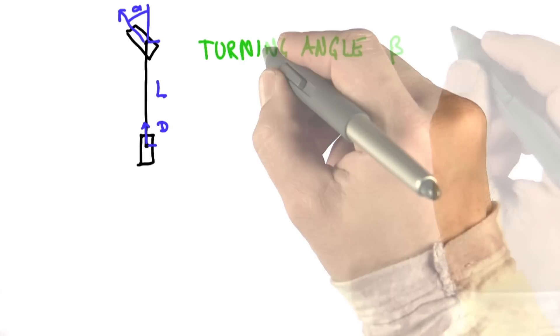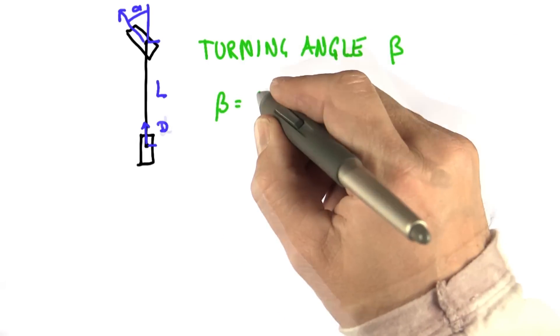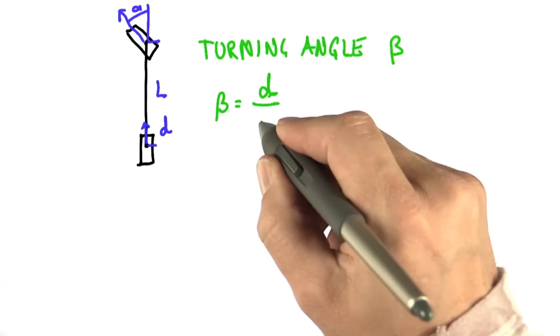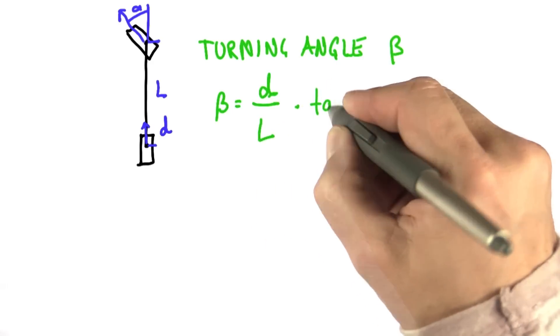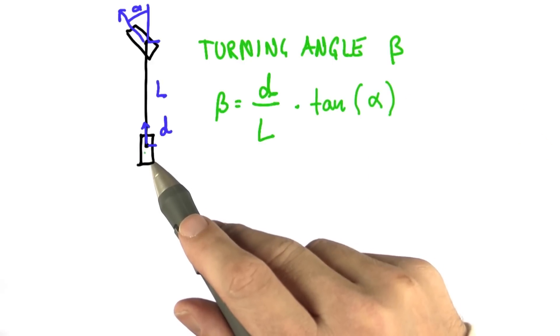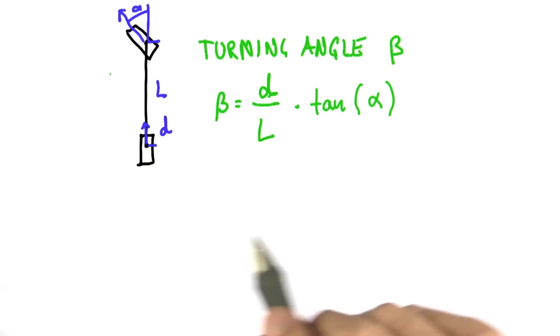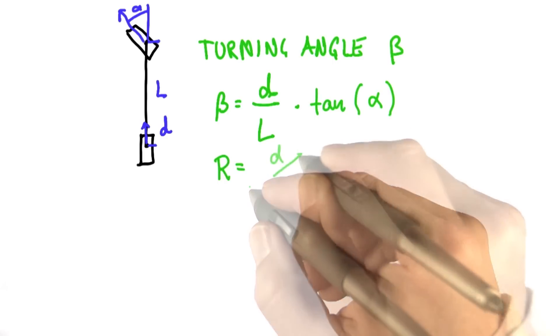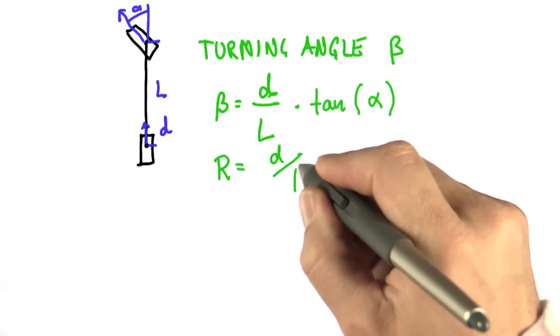And its turning angle beta is proportional to the distance that the rear tire moves forward divided by the length of the vehicle times the tangent of the steering angle. To now compute the changes of x, y, and theta in the local coordinate system, we realize the turning radius r of this robot is simply the distance that we drive forward divided by beta.